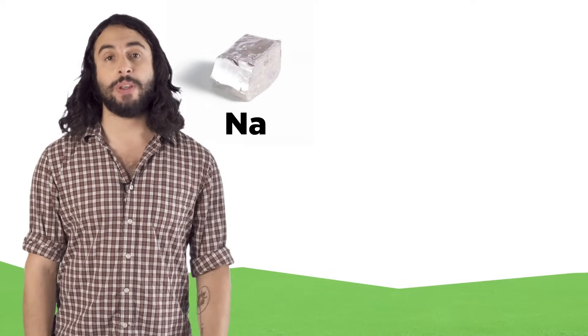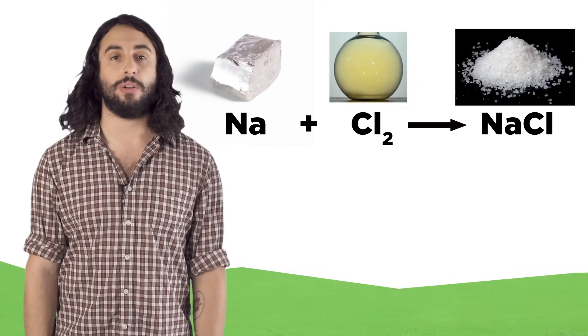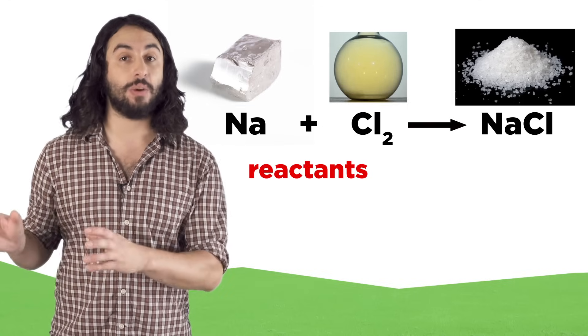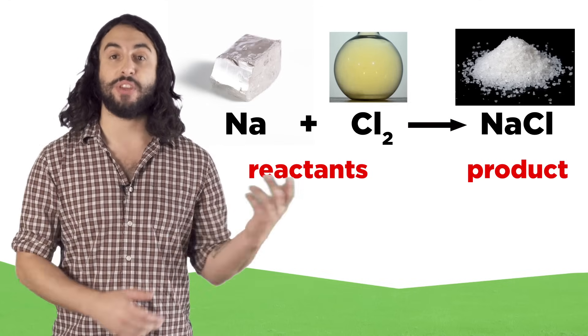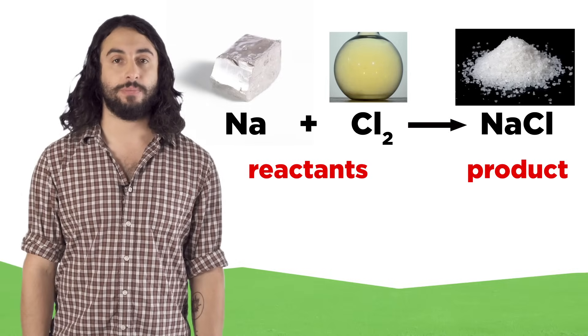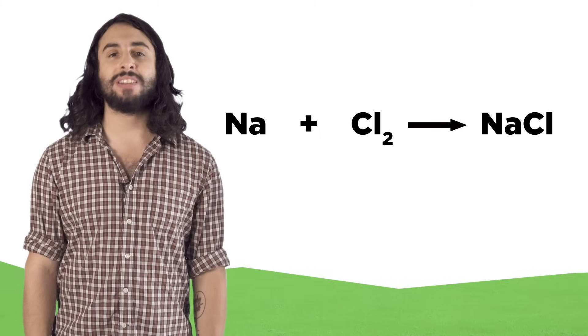For example, when sodium metal reacts with chlorine gas, you get sodium chloride or table salt. The arrow here separates the reactants, the things that react, from the products, the things that you get. The arrow also shows the direction of the reaction.